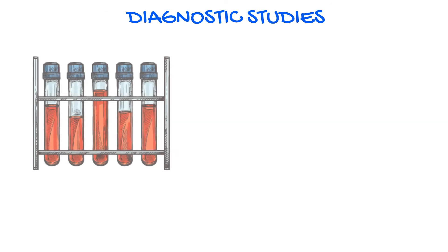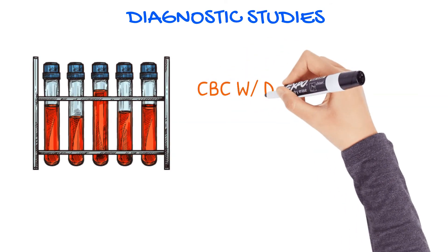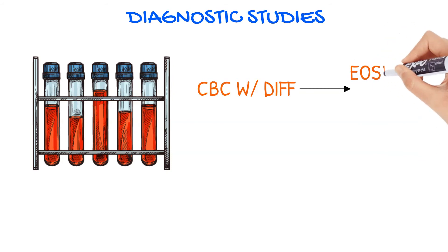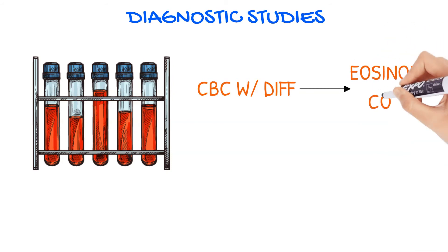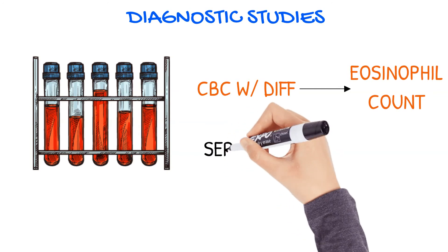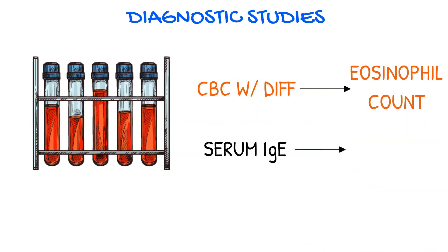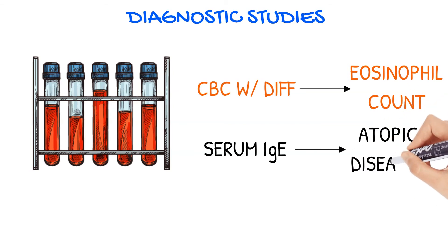The healthcare provider will probably order you to draw labs such as CBC with differential, which will provide an eosinophil count. Eosinophils are elevated in type 1 hypersensitivity reactions. Serum IgE levels may also be ordered, as elevated levels may indicate atopic diseases.